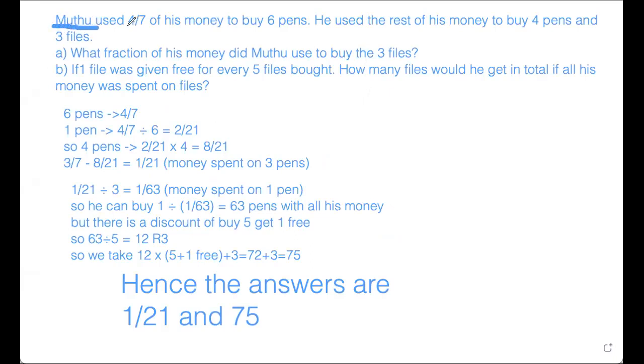Muthu used 4 over 7 of his money to buy 6 pens, and then the rest of his money was spent. So the rest of his money was 3 over 7. Let me write that down as annotations. So he spent that on 4 pens and 3 files. The question is asking you what fraction of his money, fraction not what amount of his money, was spent on the 3 files.